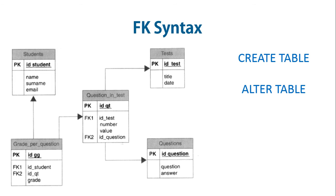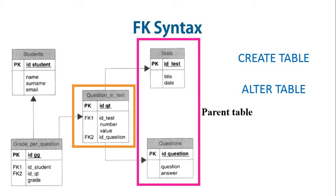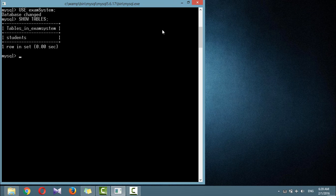This structure is about the exam system database, covered in detail in the second tutorial of this series. We learned how to create the students table. Based on this structure, the tests and questions tables are considered parent tables, while question_and_test is the child table for tests and questions but a parent table for the grade_per_question table. Let's create these tables with the necessary foreign keys added to the child tables so that foreign key constraints guarantee referential integrity. We'll begin with the parent tables.